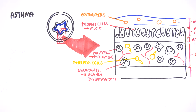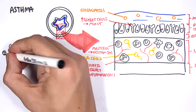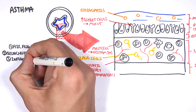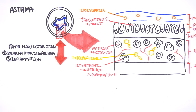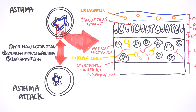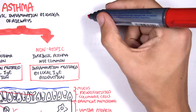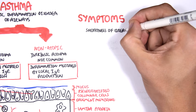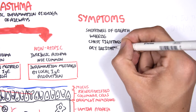Because of all these changes, there are three characteristics of asthma — the triad: airflow obstruction, bronchial hyper-responsiveness caused by histamine release, and inflammation due to the increase in neutrophils and other immune cells. Symptoms of asthma include shortness of breath, wheeze, chest tightness, and dry irritating cough.